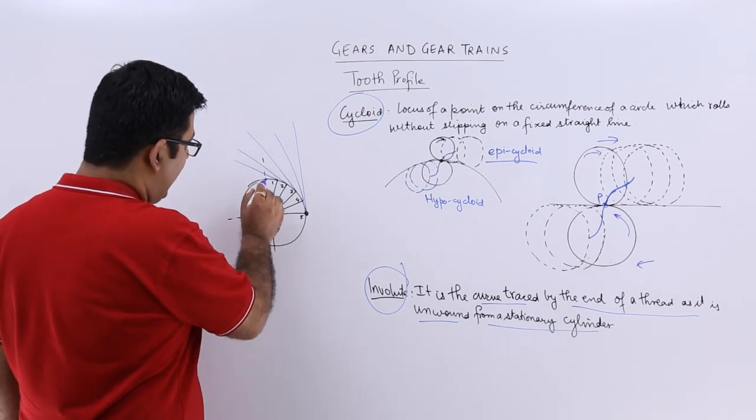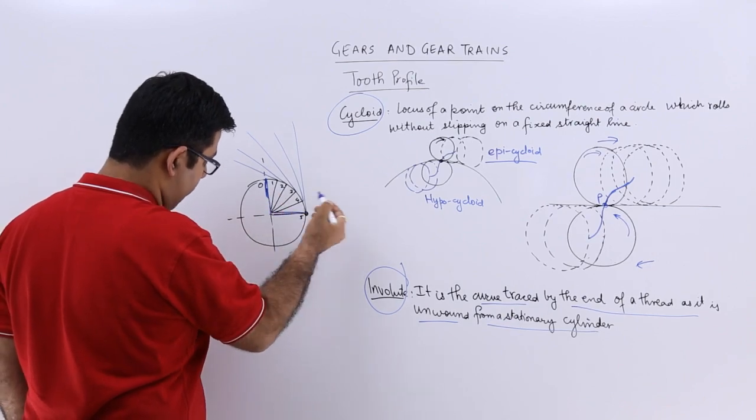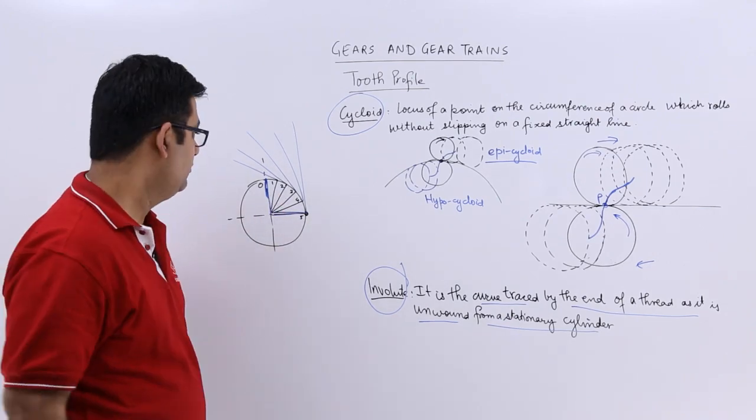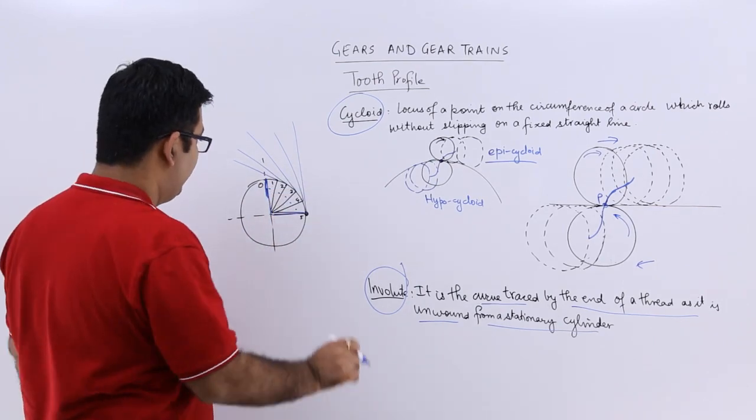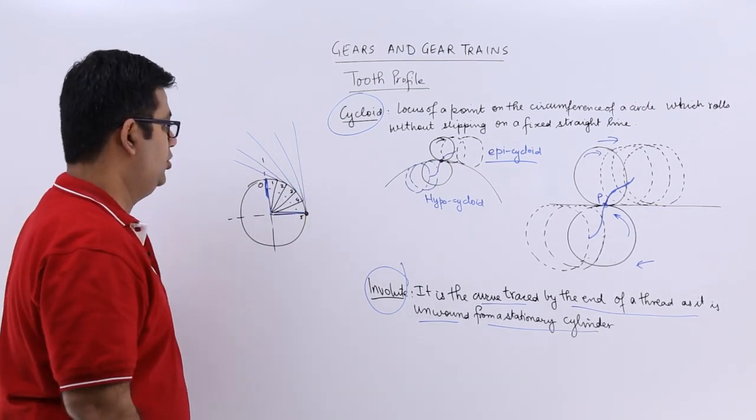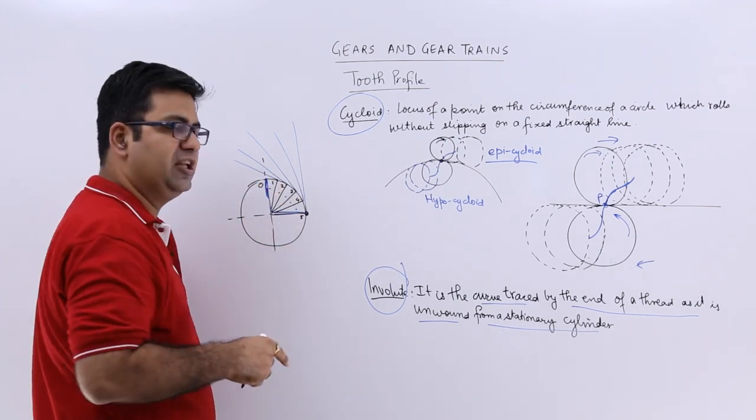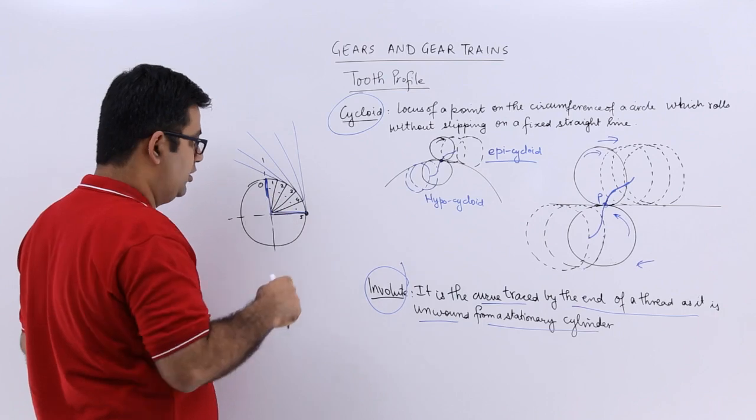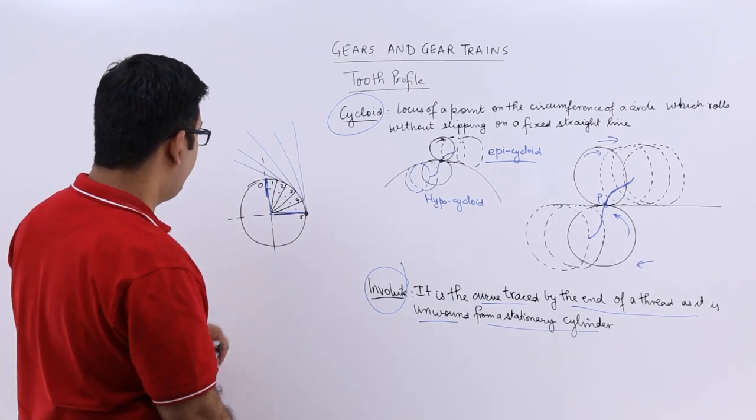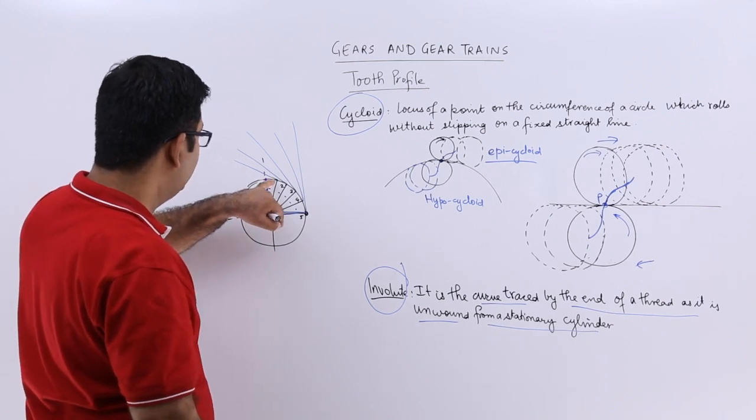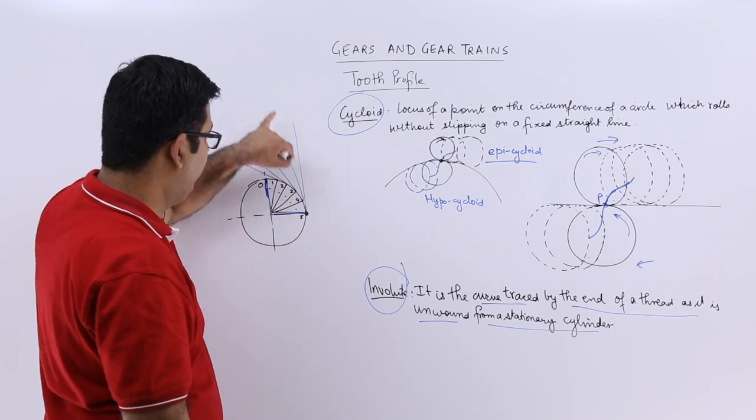So let us say that I have divided this quadrant into 5 parts. So 1, 2, 3, 4, 5. I have cut equal parts. So now what I am doing is from each and every point on this quadrant, I am drawing tangents to this circle. So from point 1 the tangent is this, from point 2 this is the tangent, point 3, point 4, point 5.